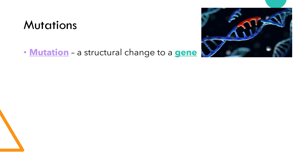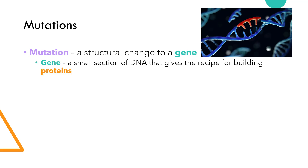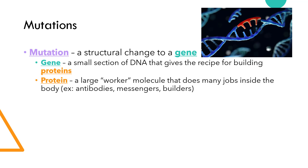We'll dive deeper into that in the next slide, but for now I want you to recall some important pieces of information you've learned that will help you understand this moving forward. Remember that a gene is a small section of DNA. DNA is your body's genetic code — the instruction manual for how your body is built and how it functions. Specifically, genes provide the instructions or recipe for building proteins in the body. A protein is a large worker molecule or group of atoms that does many different jobs in the body.